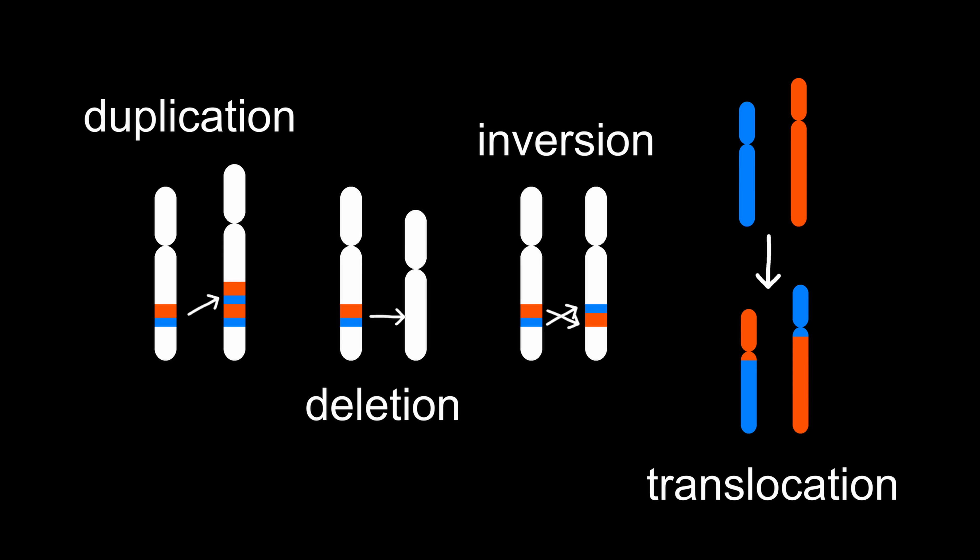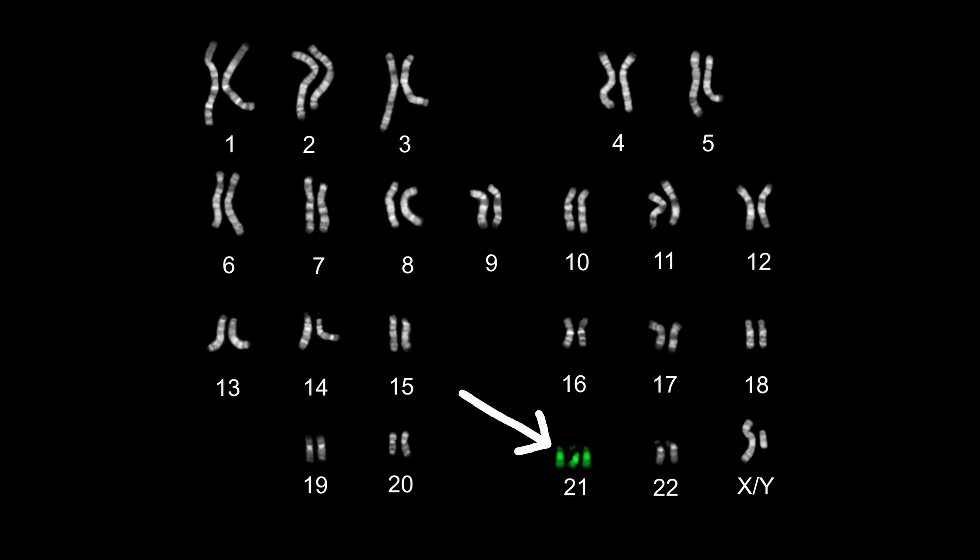Another type of mutation happens in chromosomes, where entire sections of a chromosome could be duplicated, deleted, flipped around, or transferred between chromosomes. The most famous chromosomal mutation is probably when the 21st pair of chromosomes has an additional copy, so that there's three instead of two. The result? Down syndrome.